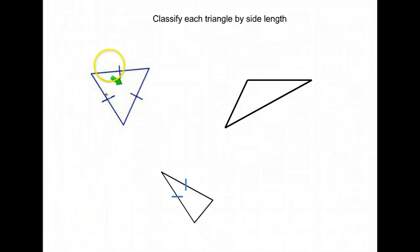This first one here, notice we have the marks, one mark, one mark, one mark. That tells me all those lines are the same length, and what triangle has all sides the same length? That's an equilateral.